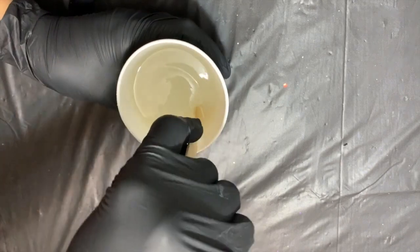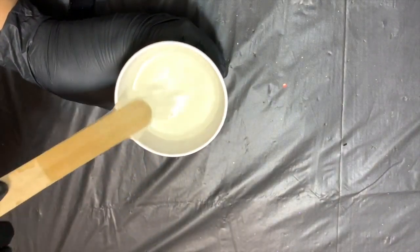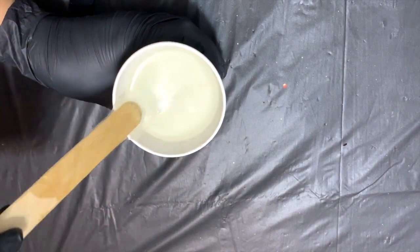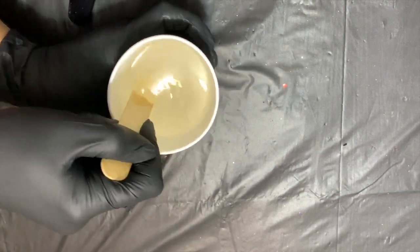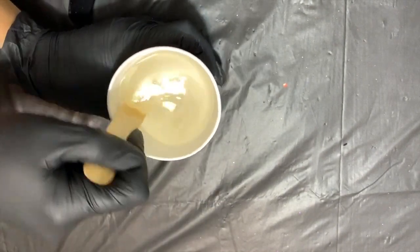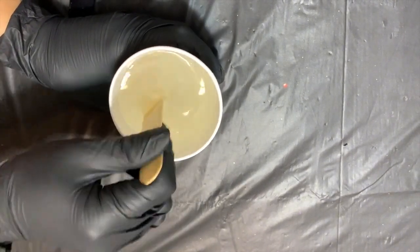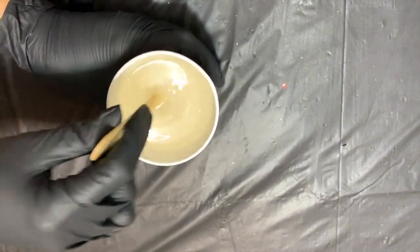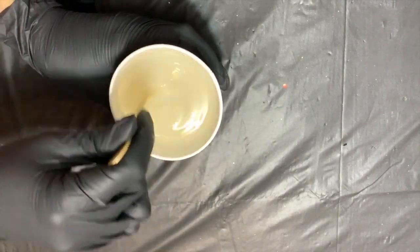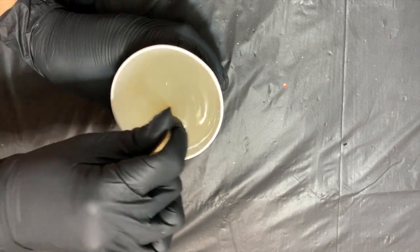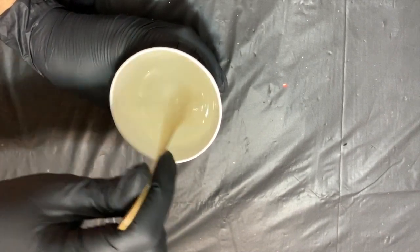Mixing resin can be fairly simple, but you want to make sure that you're following one key rule. Scrape everything. This means scrape your spatula, your popsicle stick, or whatever you're using to mix. Scrape the sides, scrape the bottoms, and continue to scrape. You'll notice I do this the entire time I'm mixing. You want to make sure that you're bringing the resin up from the bottom and off of the sides constantly. That way all of it gets mixed. If you don't scrape, you will have a bad mix.